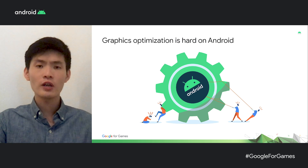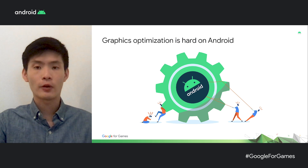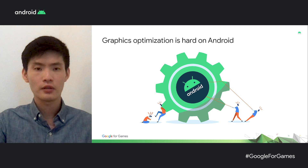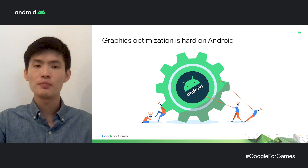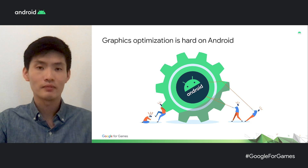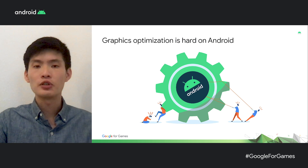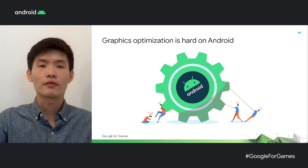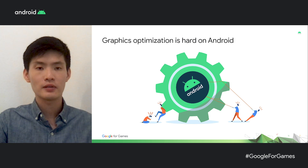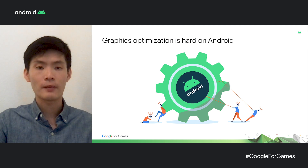We've talked with a bunch of game developers, and we've heard you. Graphic optimization is very hard on Android. The GPU on Android is like a black box. To optimize a game, you often have to rely on insights provided by other platforms. Plus, different GPUs require different vendor tools, which does not make for a very good developer experience. The Android graphics team is putting in a lot of work to address that.